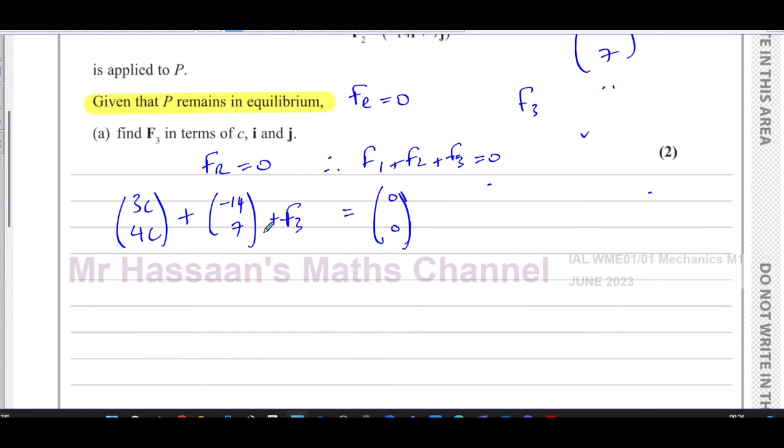We can just add these together. So we're going to have 3c minus 14, and 4c plus 7 plus F3 equals zero. So F3 is equal to basically the opposite of this. When you subtract this from both sides, you'll have a minus of these. So it'll be 14 minus 3c and minus 4c minus 7.